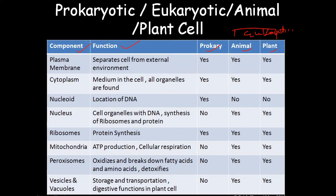Plasma membrane: its function is to separate the cell from the external environment. It is present in all prokaryotic and eukaryotic cells. Cytoplasm, the medium inside the cell where organelles are found, is also present in all forms of cells. Nucleoid, the location of DNA, is present only in prokaryotic cells and is not found in animal and plant cells.